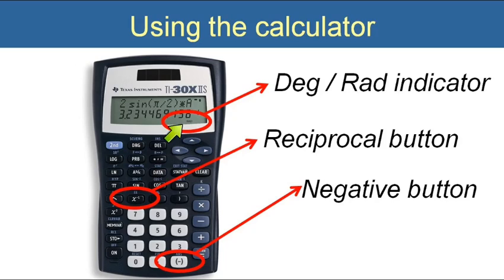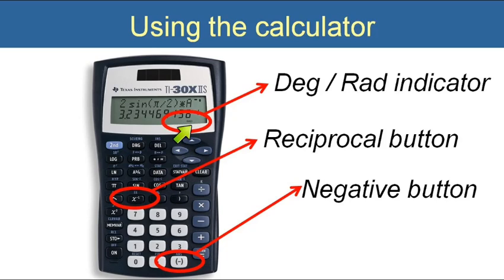Here are the buttons we're going to use in this lesson. The reciprocal button is here, and the negative button is here — not the minus button, but the negative button. Here's that degree indicator. If you're not in degrees it'll say RAD, but most of the time it's set in degrees by default. And of course everyone has seen the sine, cosine, and tangent buttons.